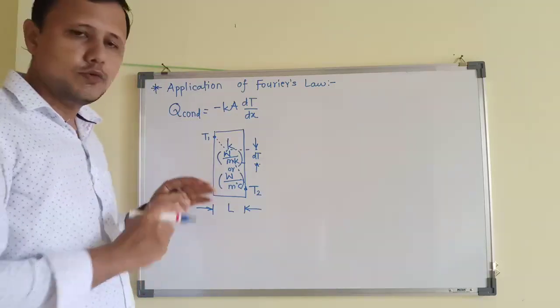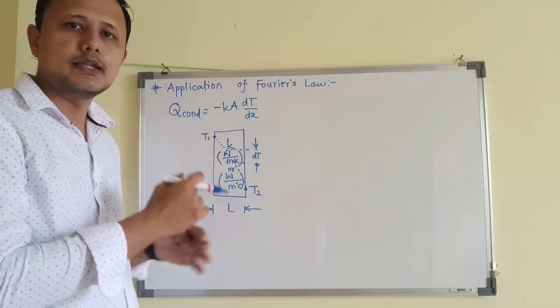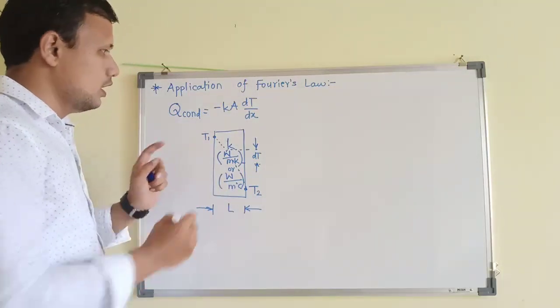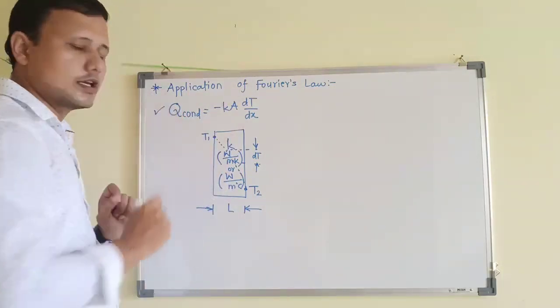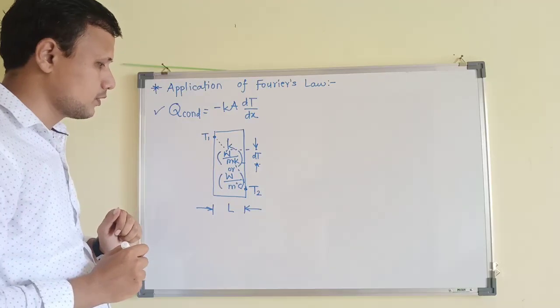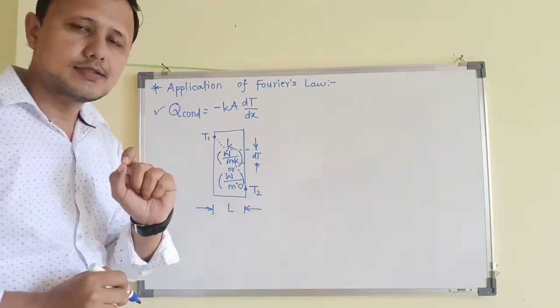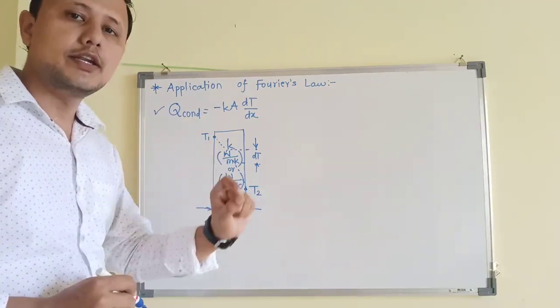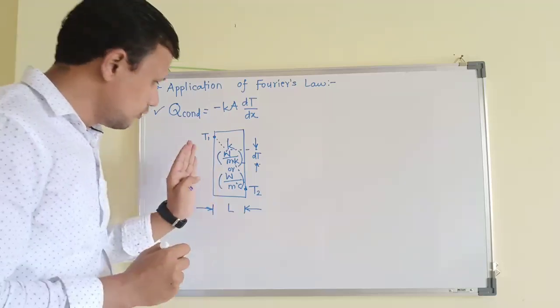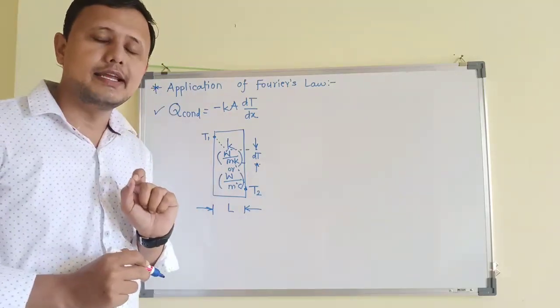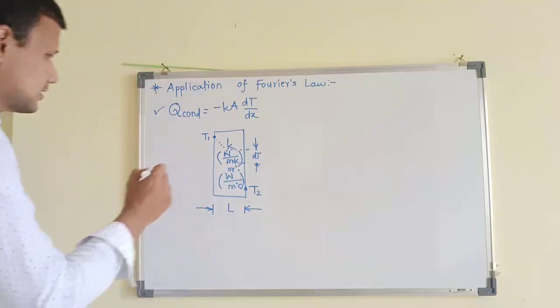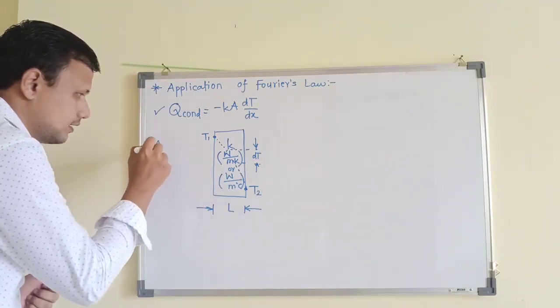So now how do we convert it into some useful formula that can be applied to any case. We already have our basic equation it is not going to change. One physical understanding we need to develop and convert into mathematics is that for a case of plane wall the cross sectional area remains constant.